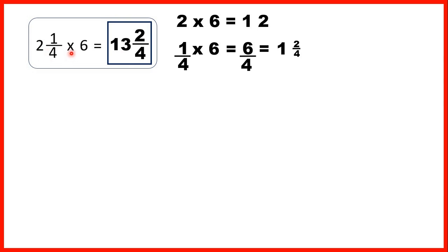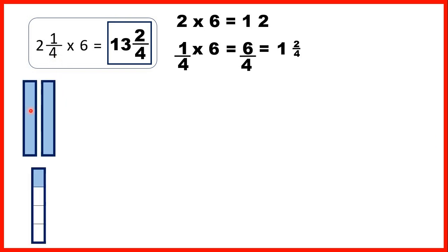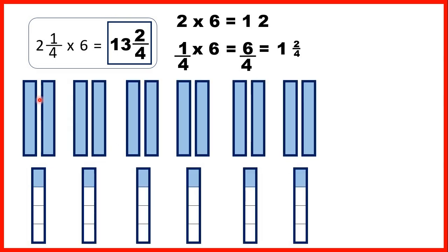Let's think about what this multiplication is really telling us. We have 2 and 1 quarter — that's 2 wholes and 1 quarter of another fraction bar — and we're multiplying by 6, so we need to show 2 and 1 quarter six times. We did 2 times 6 to get 12, and we have 12 full fraction bars here. Then we did a quarter times 6 to get 6 quarters. Each of these parts is 1 quarter, and we have 6 of them, so we have 6 quarters.